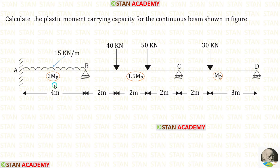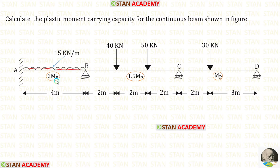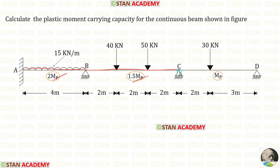We have different cross sections. For span AB, the plastic moment carrying capacity is 2 MB. In span BC it is 1.5 MB, and finally in span CD it is MB.